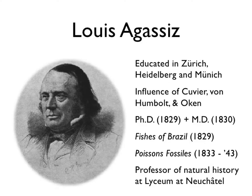Another prominent figure was Louis Agassiz. Some of you may come across him in biology classes — he was actually a prominent paleontologist educated in Zurich, Heidelberg, and Munich. He had influence from Cuvier, von Humboldt, and Oken, received his PhD in 1829 and MD in 1830. He published the Fishes of Brazil in 1829 and was a professor of natural history at the Lyceum in Neuchâtel. Later in his career he began weighing in on the debate about human categorization and intelligence.